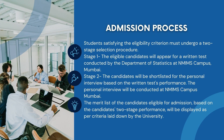For the admission process, students satisfying the eligibility criteria must undergo a two-stage selection procedure. Stage one: eligible candidates appear for a written test conducted by the department of statistics. Stage two: candidates are shortlisted for a personal interview based on written test performance. Both the exam and the interview are conducted at the NMIMS campus in Mumbai. The final merit list of candidates eligible for admission is displayed as per criteria laid down by the university.